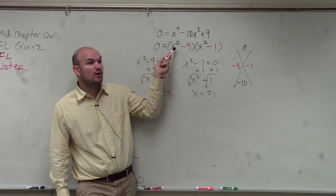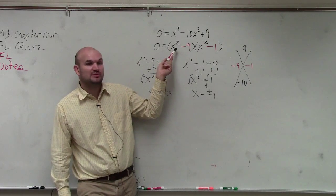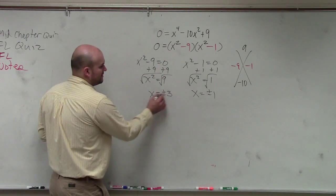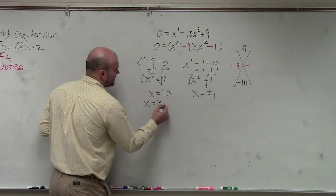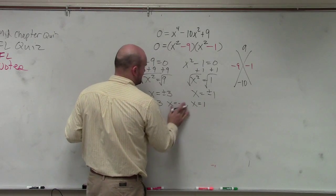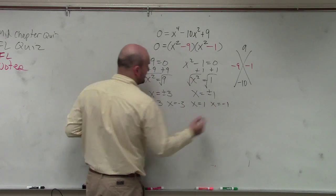These factors are in quadratic form. You can't determine the multiplicity when you have factors that are in quadratic form. So if we know the zeros are x equals 3, x equals negative 1, x equals, or I'm sorry, negative 3, x equals 1, and x equals negative 1...